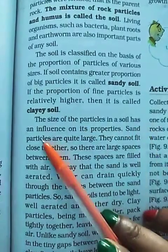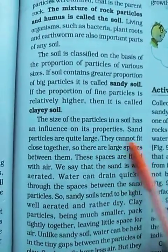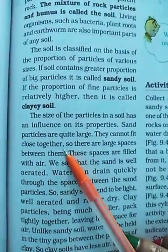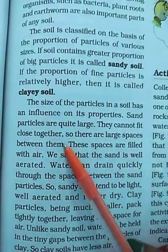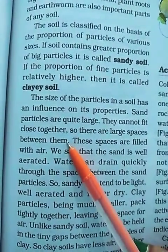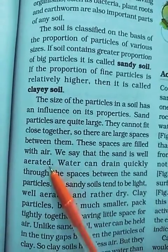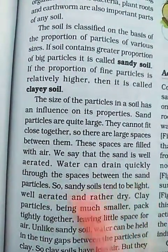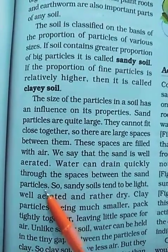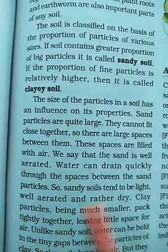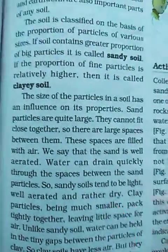The size of particles in a soil influences its properties. Sand particles are quite large — they cannot fit close together, so there are large spaces between them. These large spaces can be filled with air and water. Sand is said to be well aerated, meaning air and water can easily pass through. Water can drain quickly through the spaces between the sand particles. So sandy soils tend to be light, well aerated and rather dry, because the water quickly drains away through the spaces between the particles.